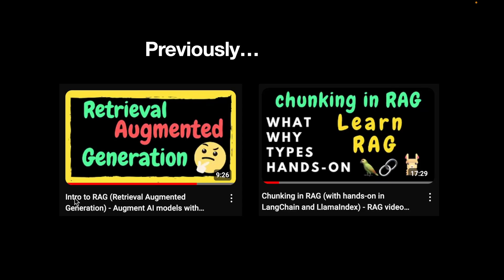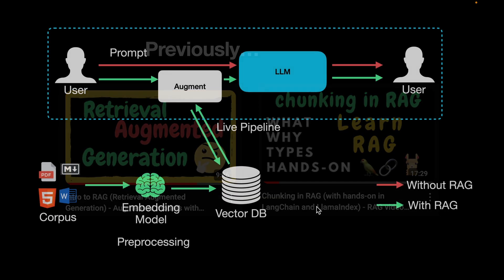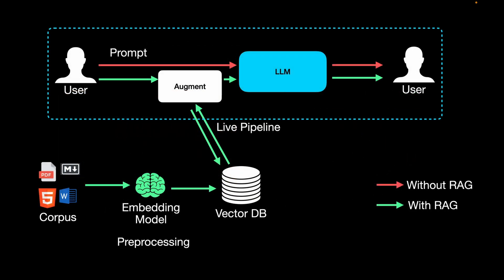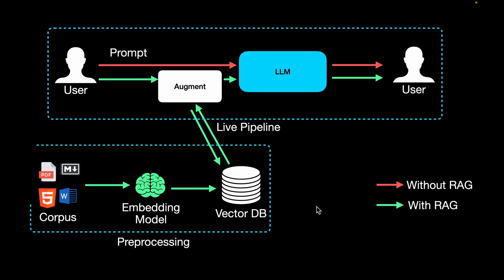In one of my previous videos we saw an introduction to retrieval augmented generation, and in a following video we also saw about chunking methods in RAG. Now in this video let's focus on PDF parsing, which is part of the pre-processing pipeline.